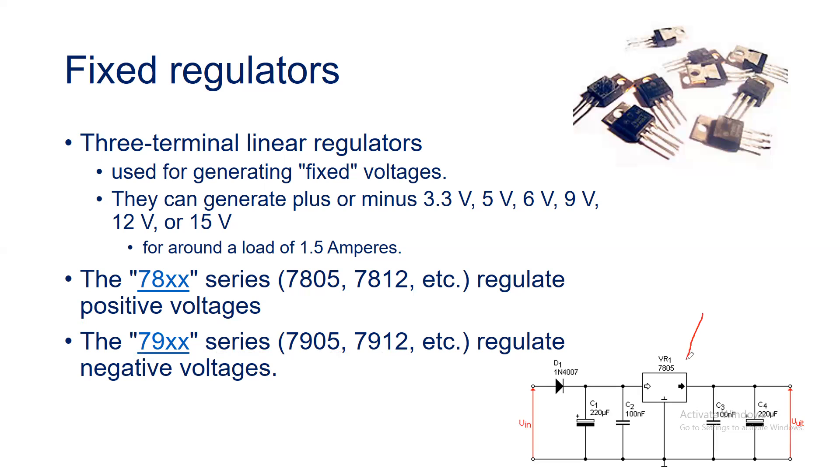This diagram shows the schematic connection of how the IC can be connected. The three pins of the IC: one is the input, one is the output, and one is the ground. This is for the 7805 IC, so it is going to provide us constant 5 volts at the output terminal with respect to ground.